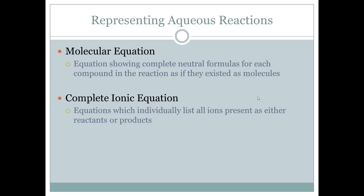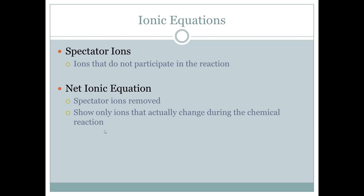Representing aqueous reactions: there are two more ways to represent these chemical equations. The molecular equation shows the complete neutral formulas for each compound in the reaction as if they existed as molecules — that's what we just did. Then the complete ionic equation individually lists all the ions that are present as either reactants or products — we take all the aqueous ones and break them down. The spectator ions are the ones that don't really participate in the reaction; they're just in the water and will stay in the water. Once we remove those, we get the net ionic equation, which shows only the ions that are actually changed during the chemical reaction.